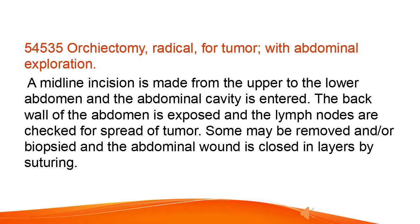Orchiectomy, radical, for tumor, with abdominal exploration. A midline incision is made from the upper to the lower abdomen and the abdominal cavity is entered. The back wall of the abdomen is exposed and the lymph nodes are checked for spread of tumor. Some may be removed and/or biopsied and the abdominal wound is closed in layers by suturing.